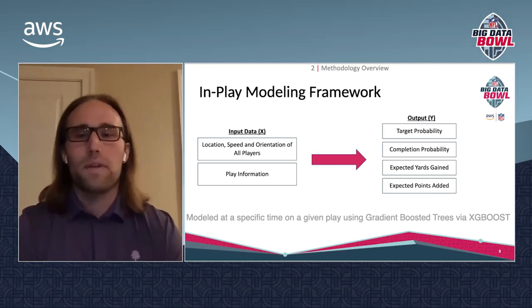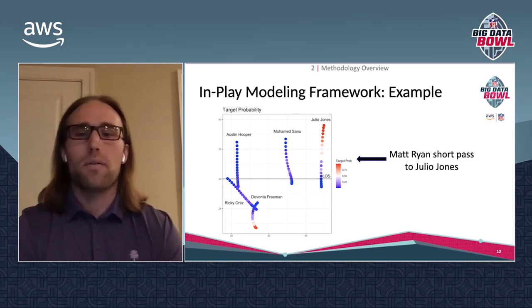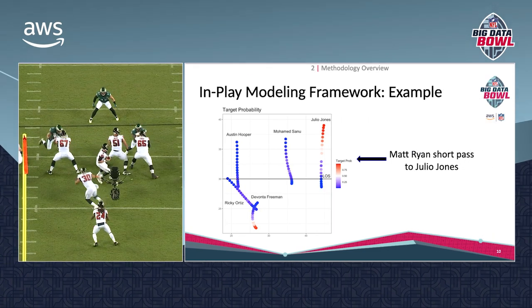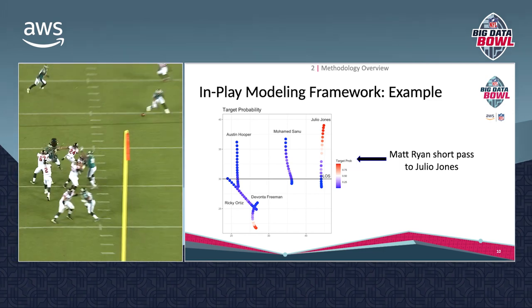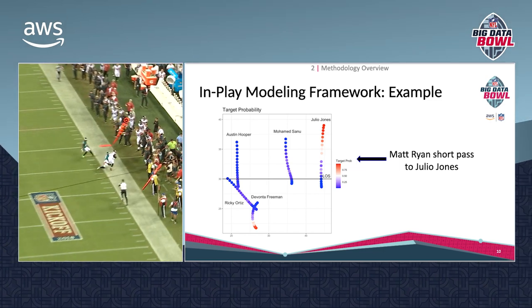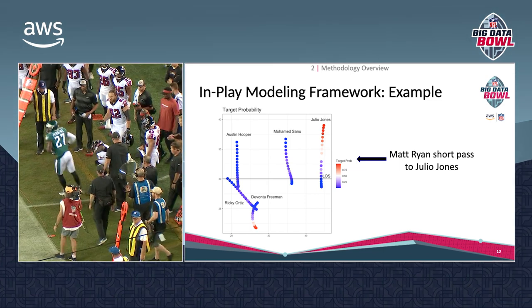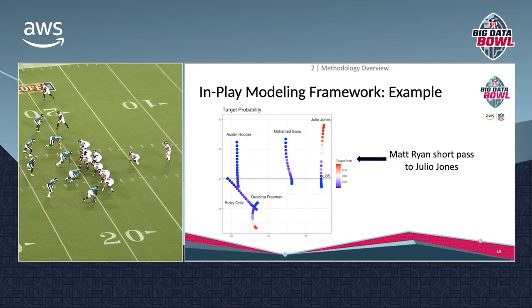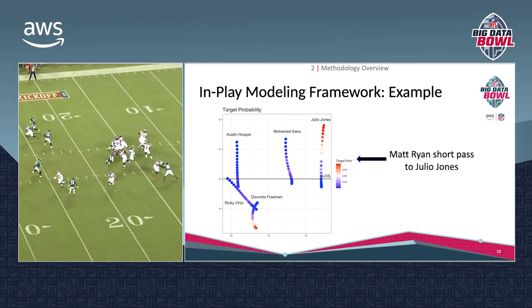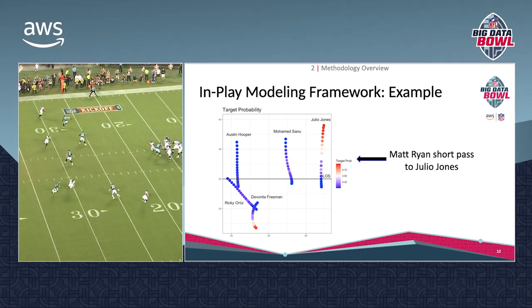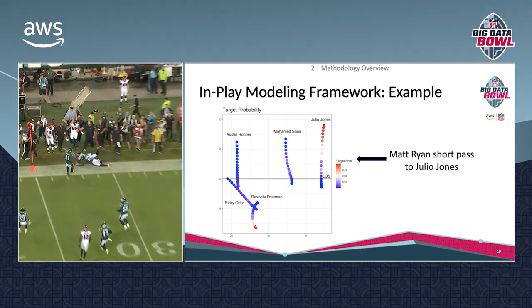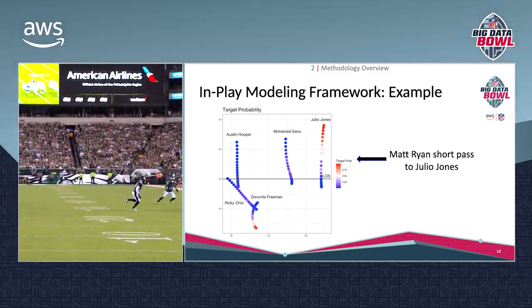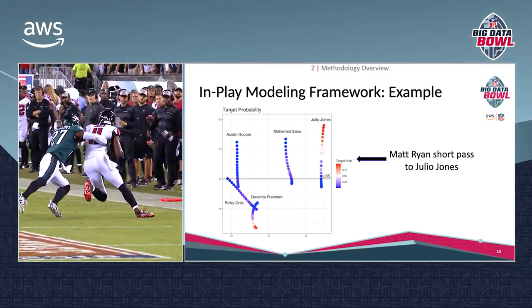To illustrate one of these model outputs, we show a short Matt Ryan pass to Julio Jones. In the plot, we show the routes of the five eligible receivers. Each dot represents a location of a receiver at a point in time and is colored by the target probability. On this play, Ryan drops back from under center, initially turns towards Freeman, then turns to Julio. We can extend this example for all model outputs to contextualize a play.